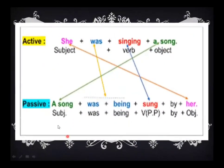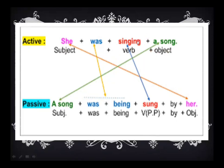Here we have a few basic rules of active and passive. 'She was singing a song' — 'she' is your subject, 'was' is your auxiliary verb, 'singing' indicates your tense, and 'song' is your object. When we transform the sentence from active to passive, the subject takes the place of the object and the object takes the place of the subject, along with the auxiliary verb used plus V3. This sentence is in the continuous tense, so we use 'being.' Therefore: 'A song was being sung by her.'